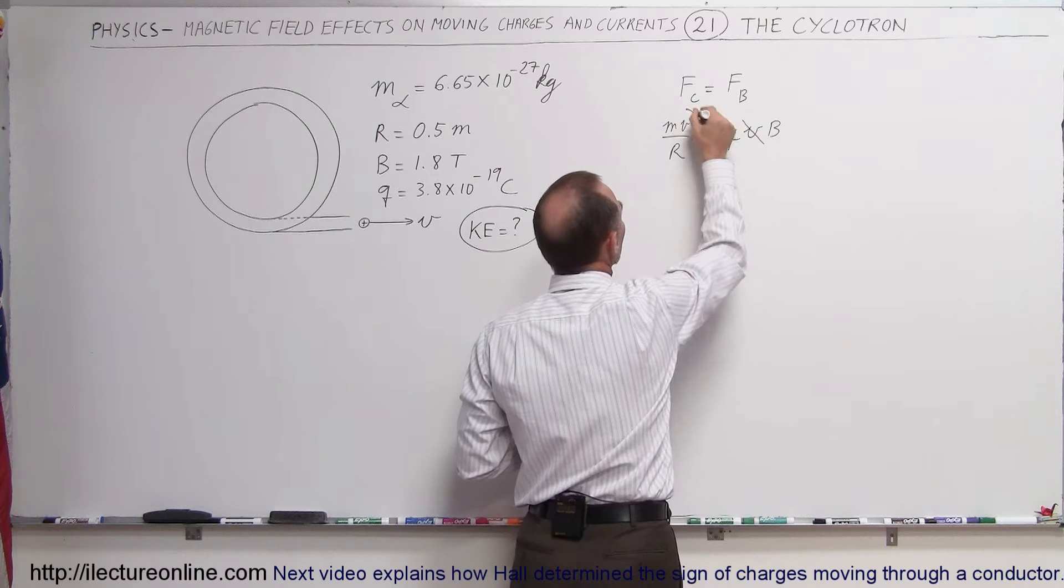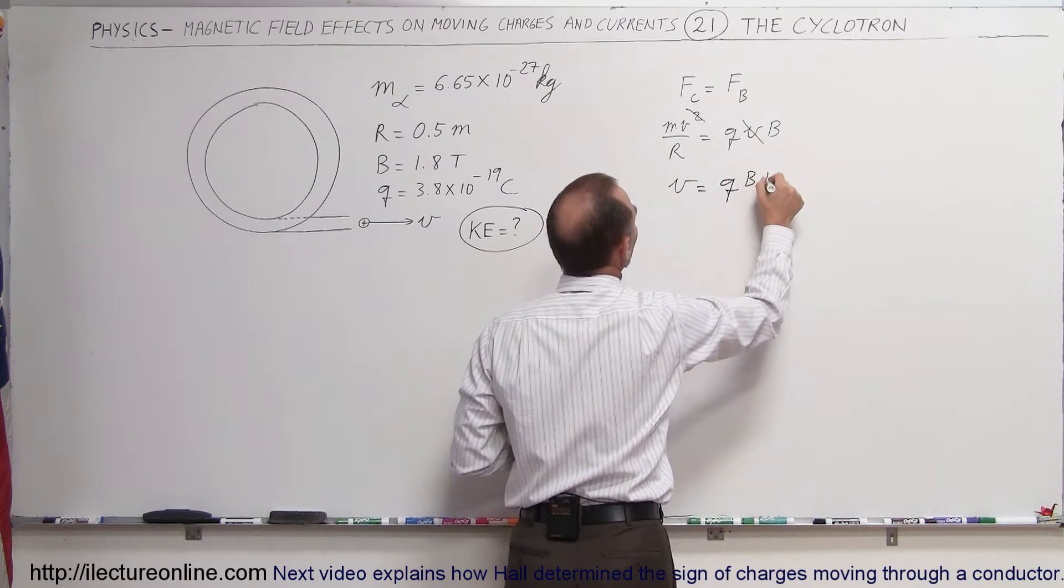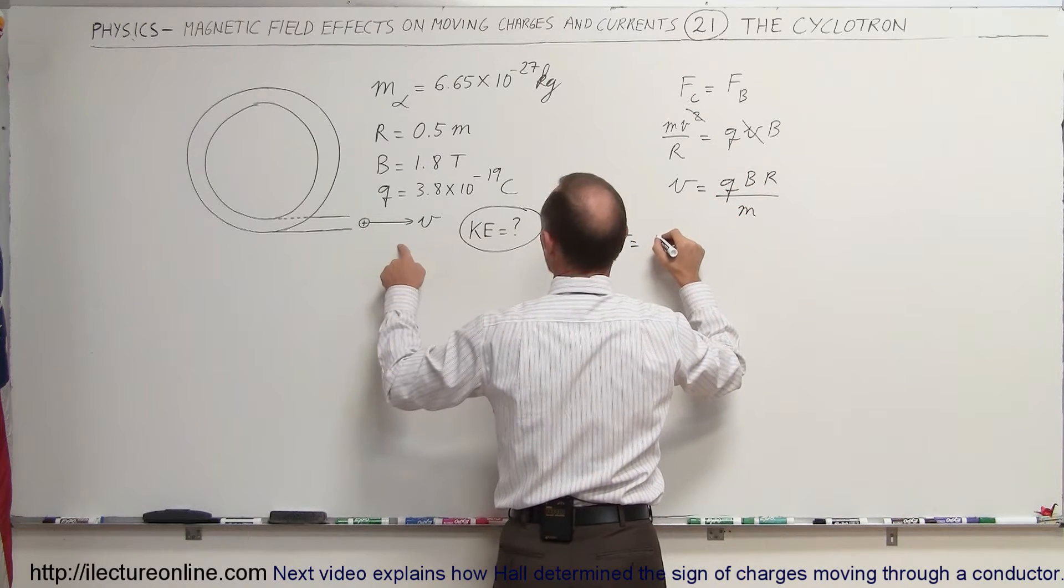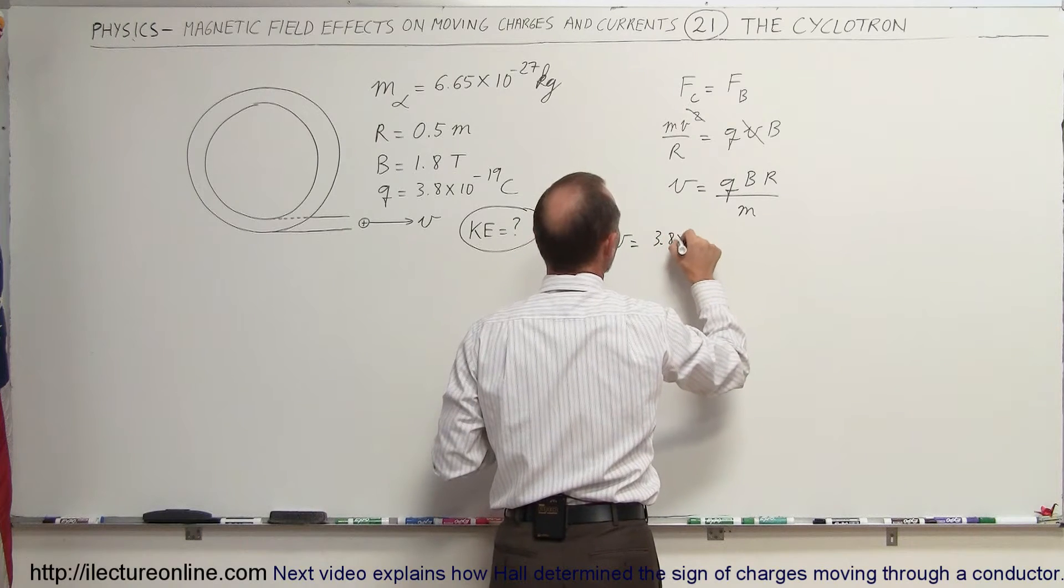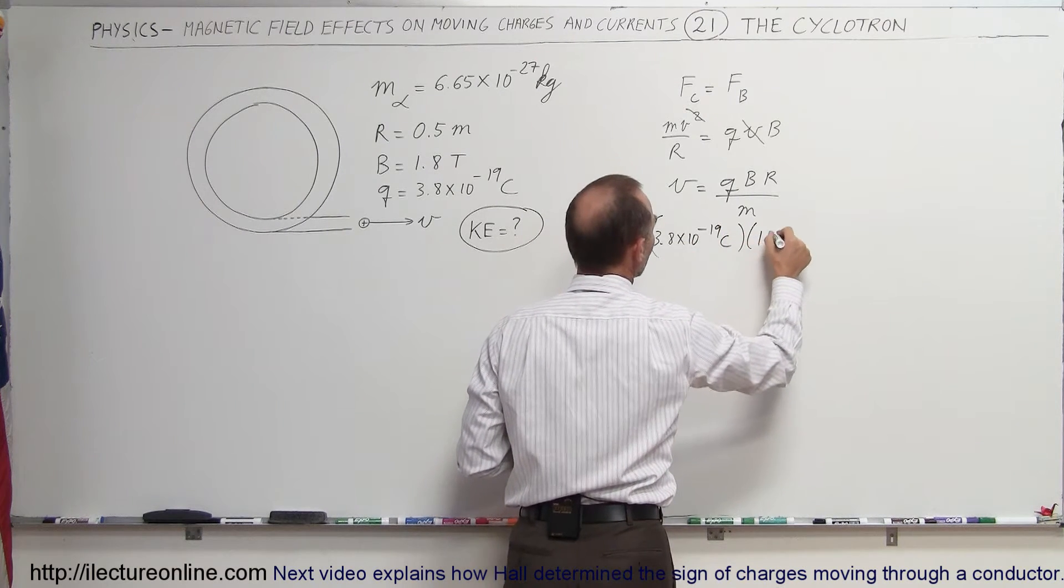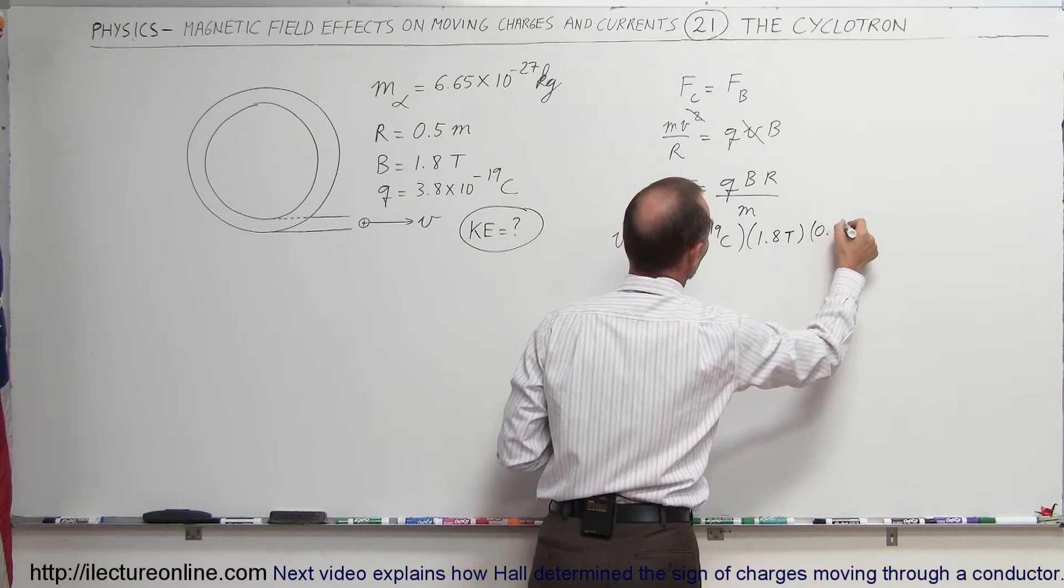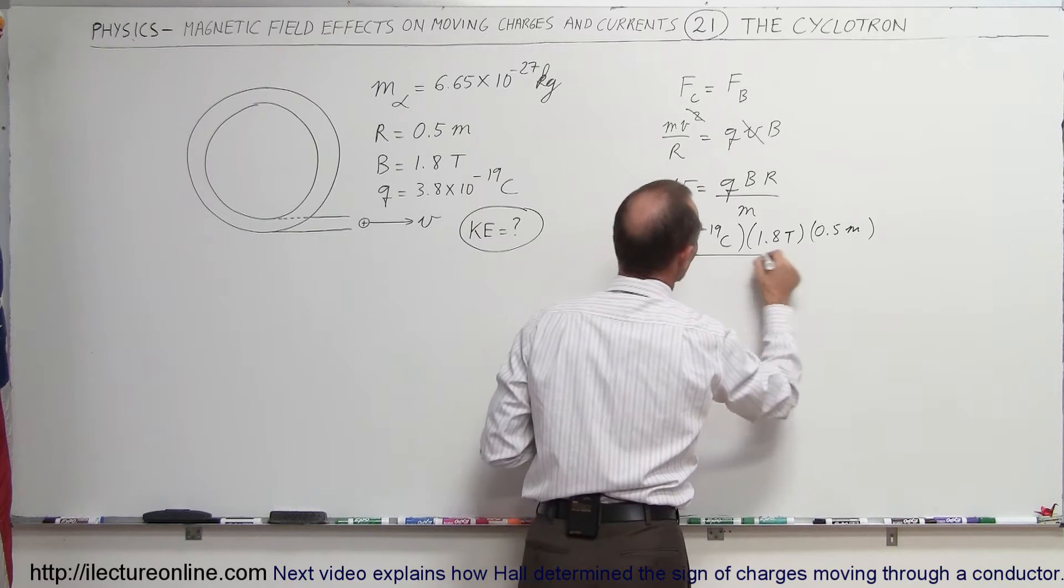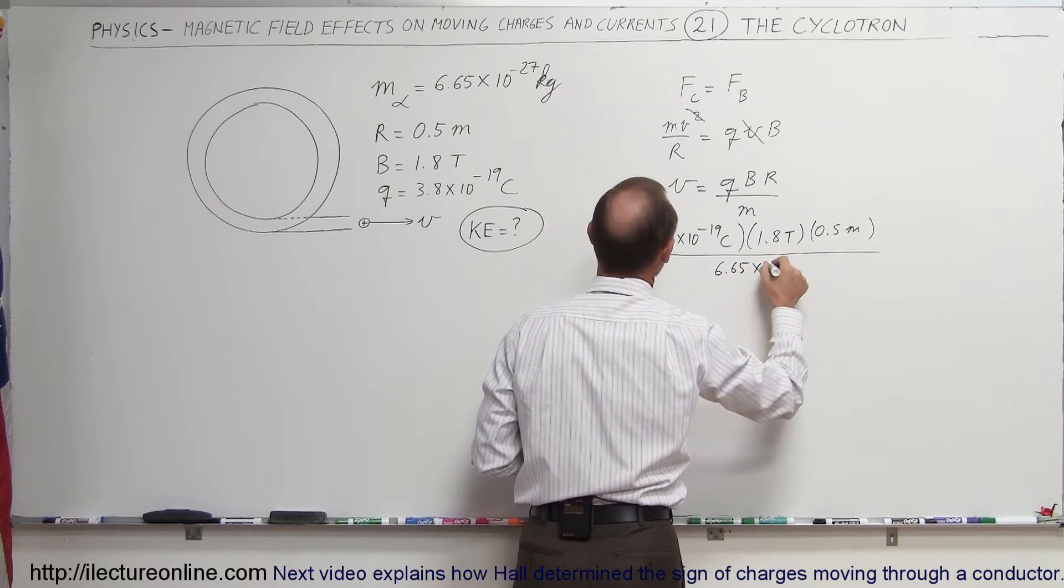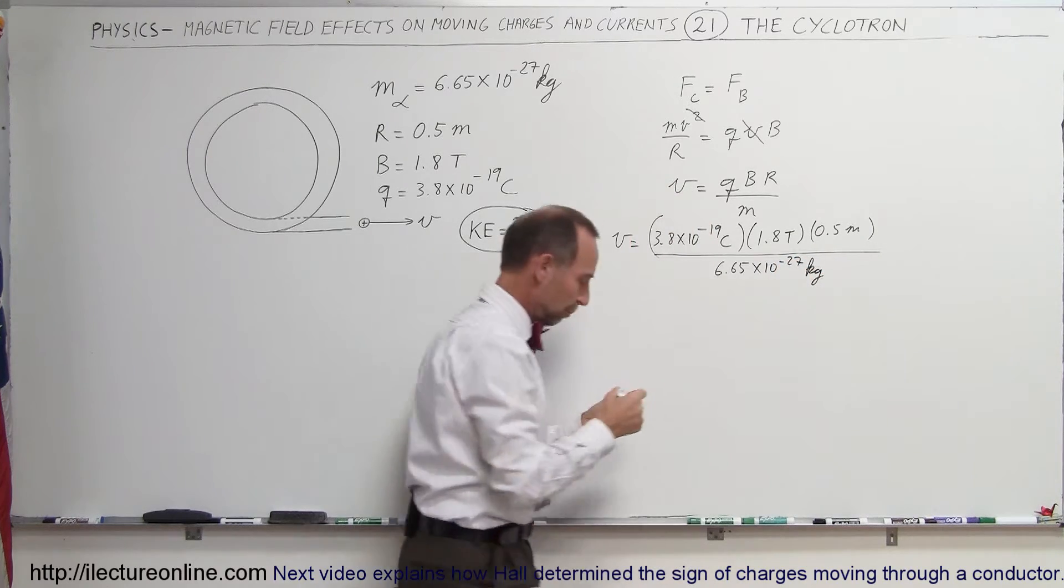We'll simplify the equation like this. We can say that velocity is equal to q times b times r divided by the mass of the particles. The velocity is equal to the charge 3.8 times 10 to the minus 19 coulombs, magnetic field of 1.8 teslas, the radius of 0.5 meters, and the mass of an alpha particle at 6.65 times 10 to the minus 27 kilograms, which is roughly the mass of 4 protons.